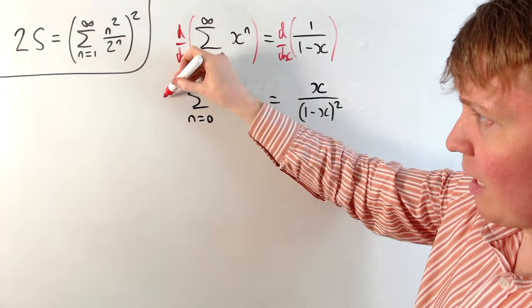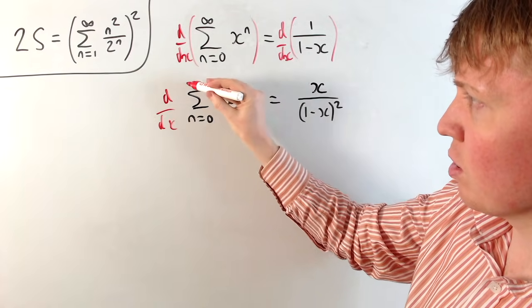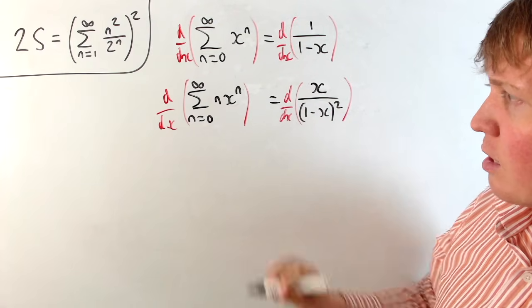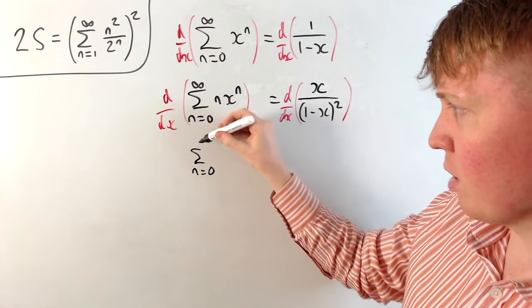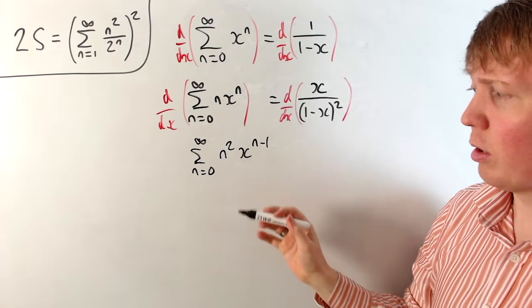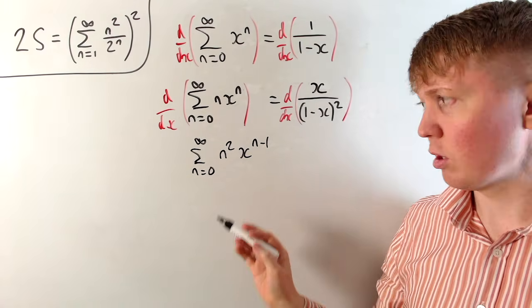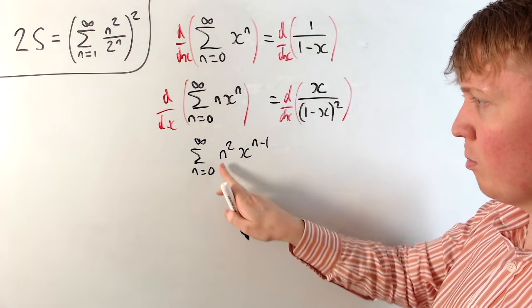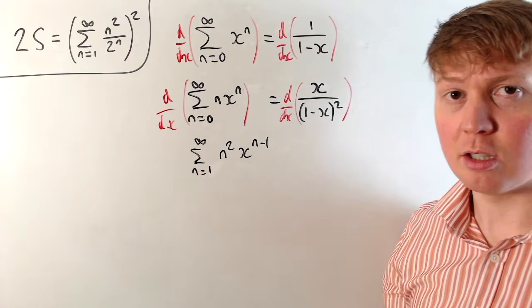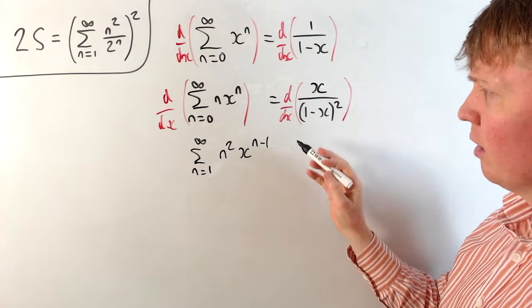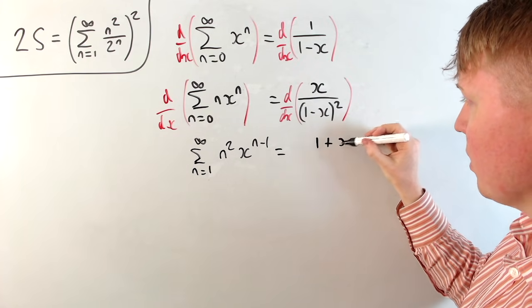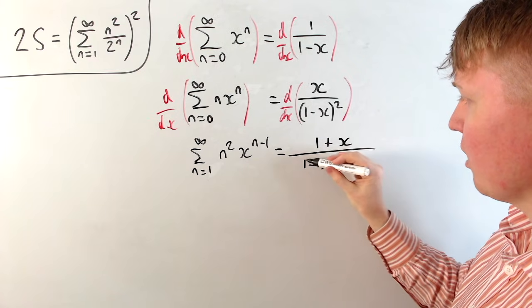Under the assumption that term-by-term differentiation is valid, differentiating again on the left-hand side gives the sum from n equals 0 to infinity of n squared times x to the n minus 1. The n equals 0 term is just 0, so we can write this as the sum from n equals 1 to infinity. This is really starting to look like our inner sum. Differentiating the right-hand side — using the quotient rule — gives 1 plus x divided by 1 minus x all cubed.